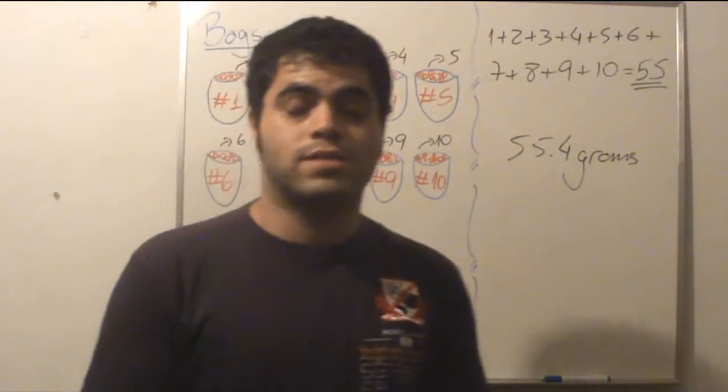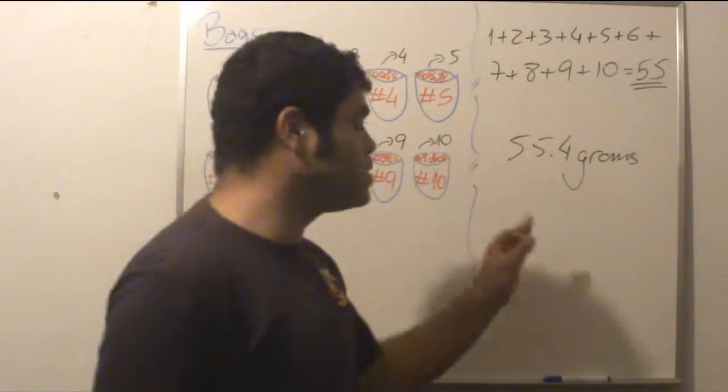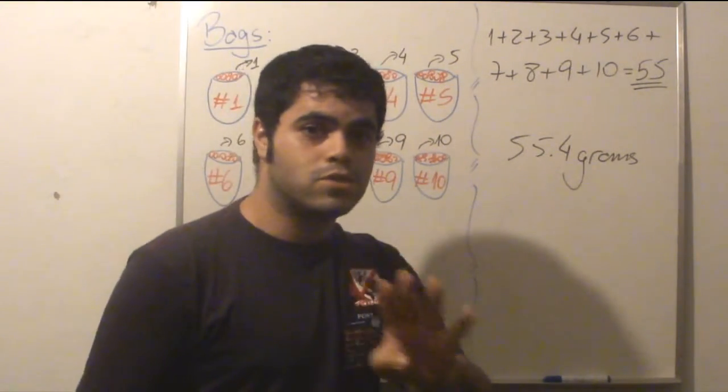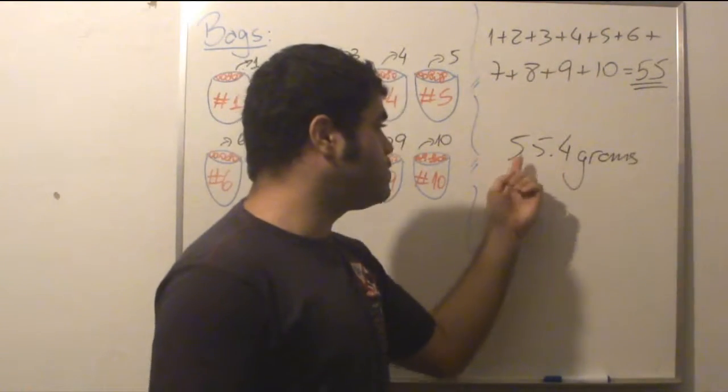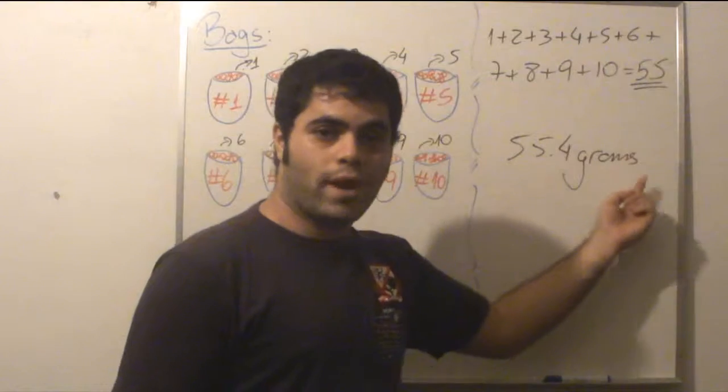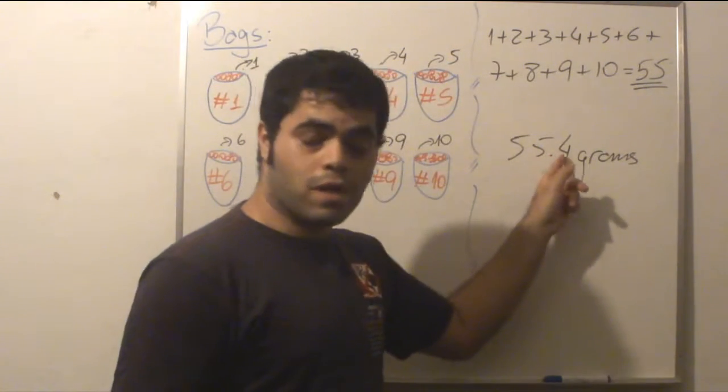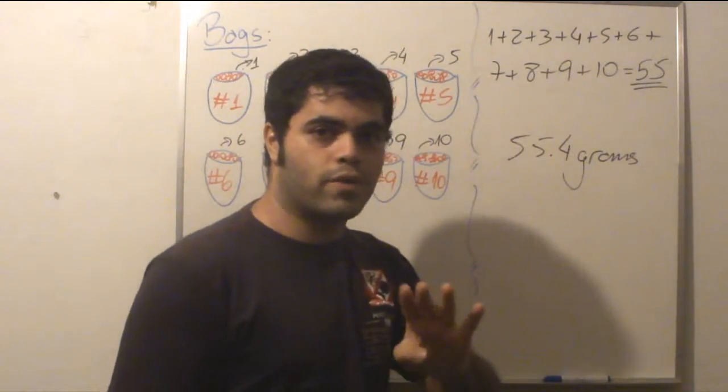So if the counterfeit coin is in the fourth bag, I would have 1.1 times 4. When I weigh them together, I'd have 55.4 grams, so I would know that the counterfeit coin would be in the fourth bag, right?